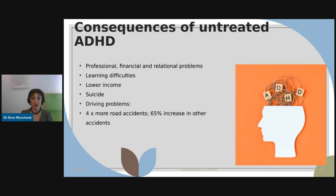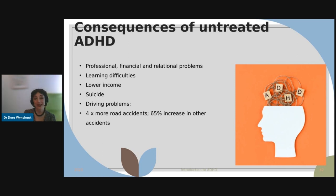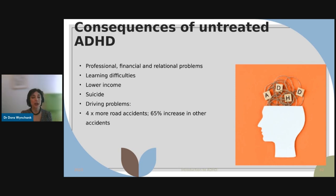Untreated ADHD in adults leads to professional problems, financial problems, and relationship problems. In children, there may be co-existing learning problems like dyslexia or dyspraxia, or simply a lower educational standard due to poor focus, distraction, unfinished homework, or forgetfulness. Adults with untreated ADHD have a higher risk of lower income, a higher chance of suicide, and significantly more accidents — four times as many road accidents — with increased emergency room visits due to injuries.